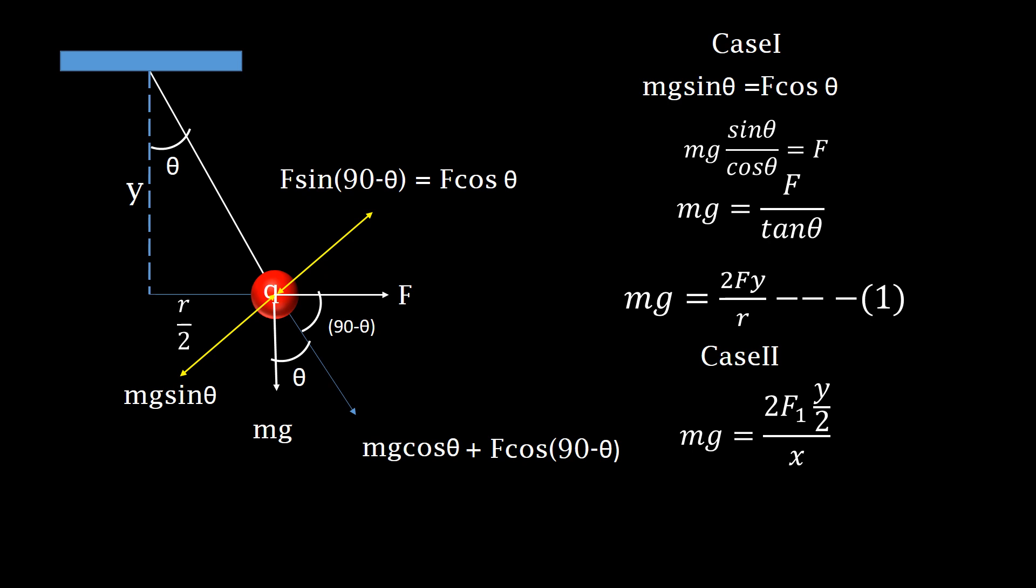Therefore, we get the equation as mg equals 2 times F1 times y by 2 upon x, or mg equals F1 y upon x. Let's mark it as equation number 2.